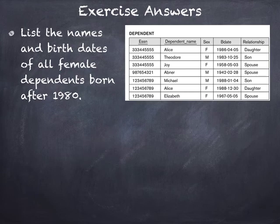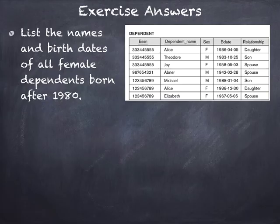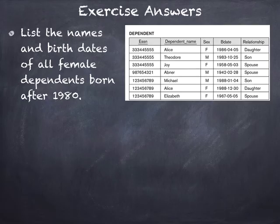If you remember the schema, we had a dependent table. Dependent is a relation or weak entity that comes from the relationship between the employee and his dependents. The scenario stated that the employee may have multiple dependents or may have none. So we created a table called DEPENDENT. It has the employee SSN along with the dependent name as its primary key, and dependent sex, birth date, and relationship. The goal of the question is to find female dependents born after 1980.